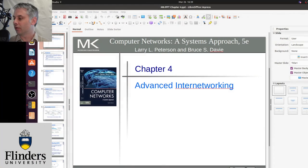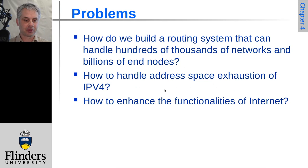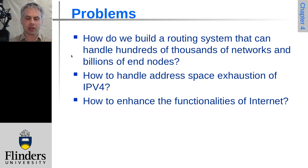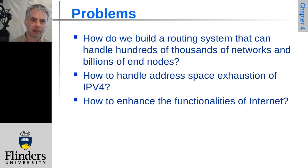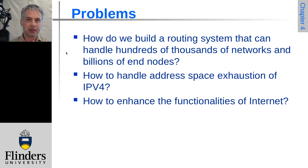Welcome back to Computer Networks. We're going to have a look at Chapter 4, Advanced Internetworking. There are three problems we're trying to address here. One is how do we scale things up - this was a big problem in the 1990s as the internet was growing explosively, faster than Moore's Law was growing the capacity of switching hardware. We now have a system with billions of end nodes and hundreds of thousands of networks.